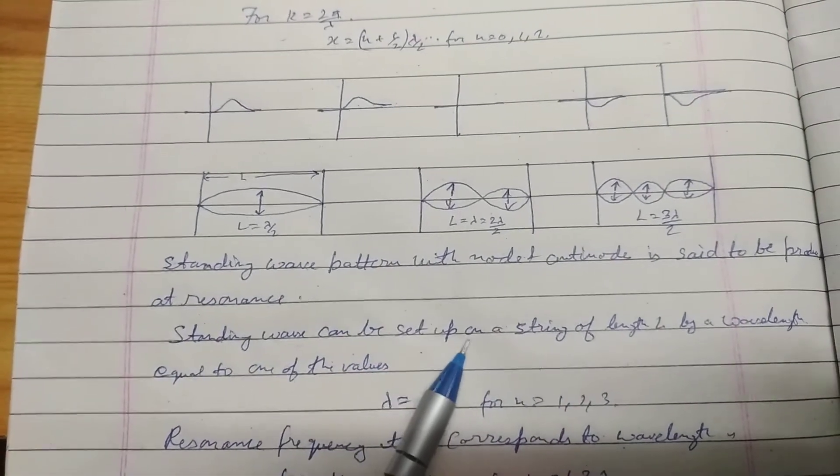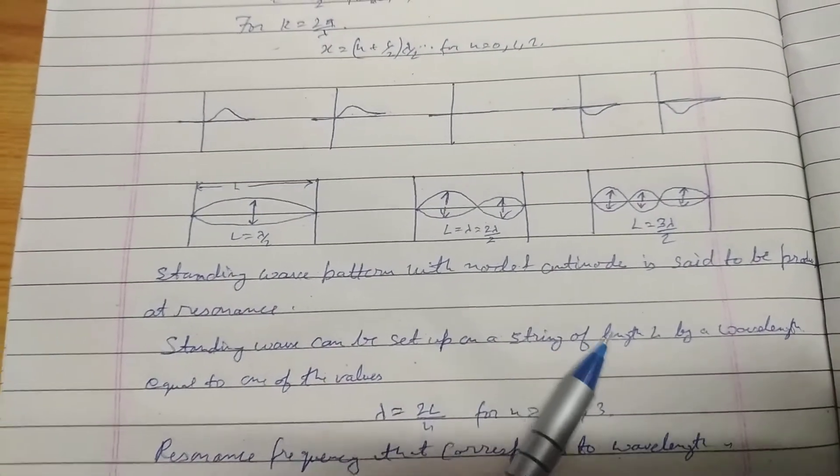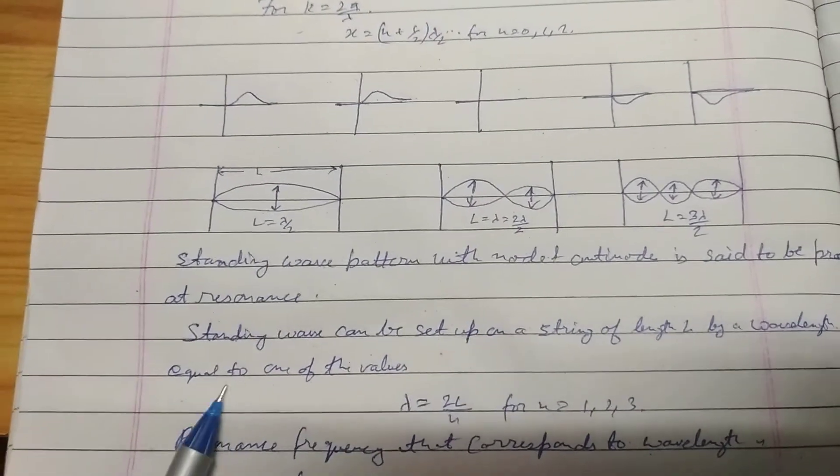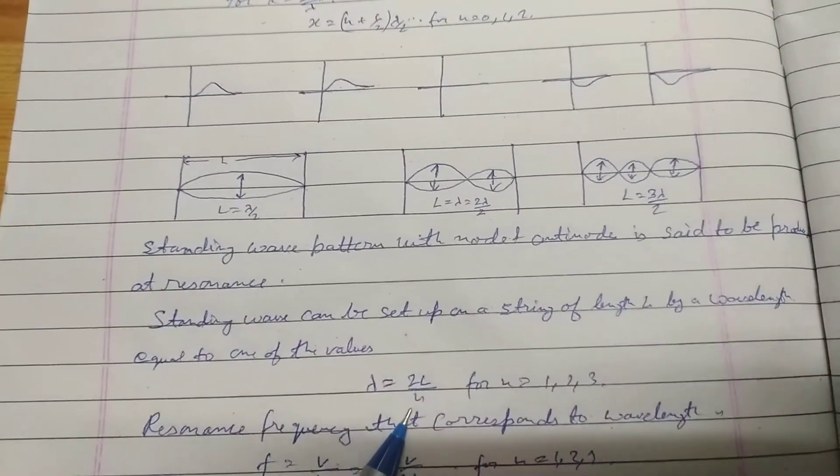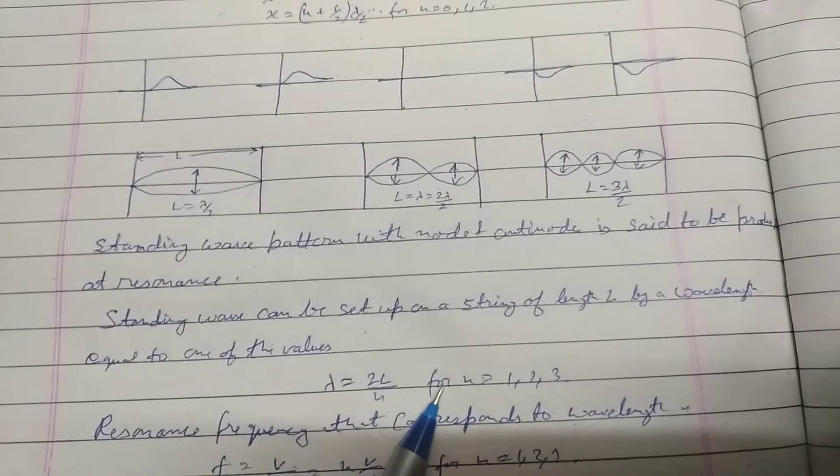The standing wave can be set up on a string of length L by a wavelength equal to one of the values: lambda equals 2L by n for n equals 1, 2, 3.